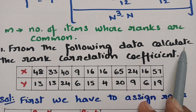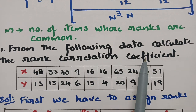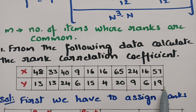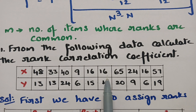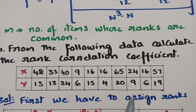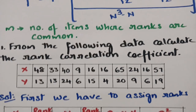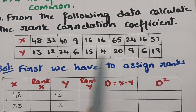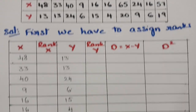From the following data, calculate the rank correlation coefficient. These are all the X series and these are all the Y series. First of all we have to assign the ranks — be careful while assigning the ranks, then after applying the formula you will get the correct solution. So first we have to assign the ranks. Here are the X series and here are the Y series.